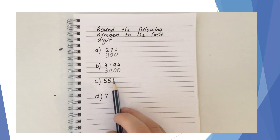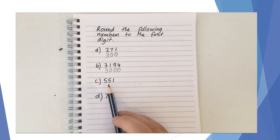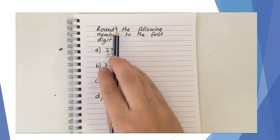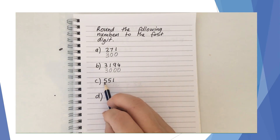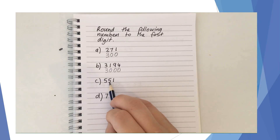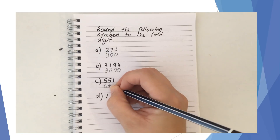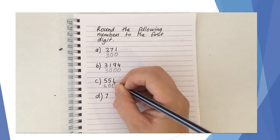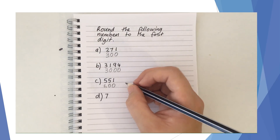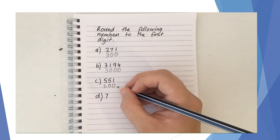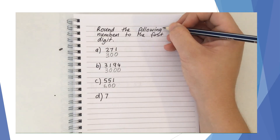C is 551, which is right in the middle. The question asks us to round it to the first digit, so we look at the second digit, which is 5 — so we need to take it up. That gives us 600. Now 551 is only a tiny bit closer to 600 than to 500. If you were estimating you might leave it at 550, but the question asks us to round to the first digit, so we must follow the instructions.